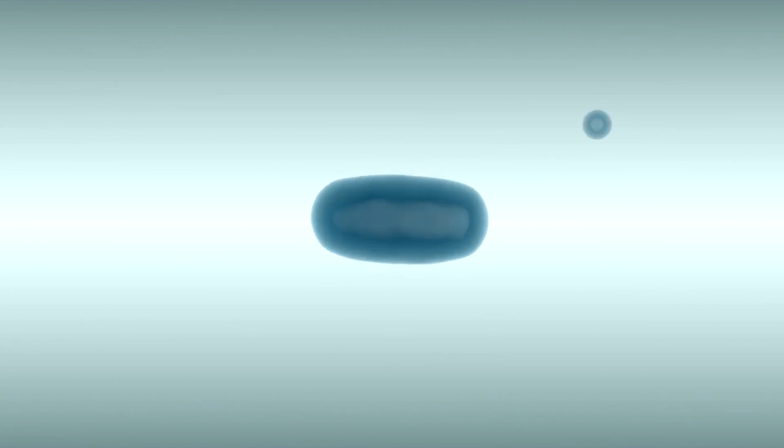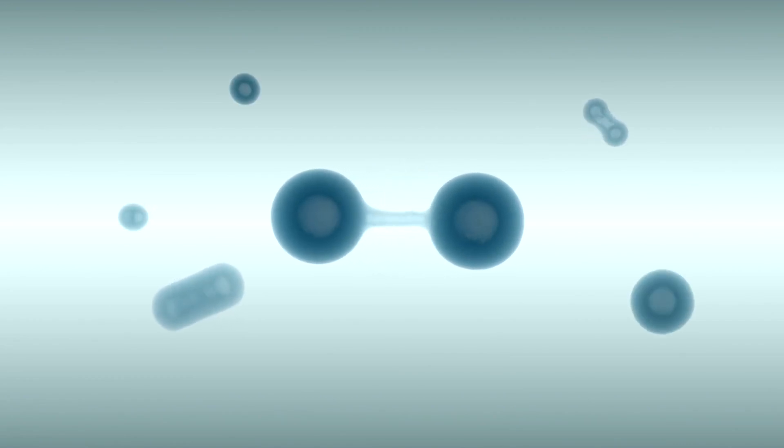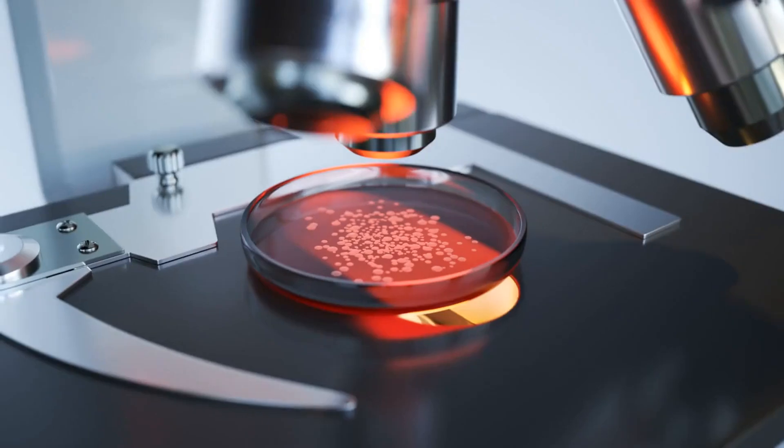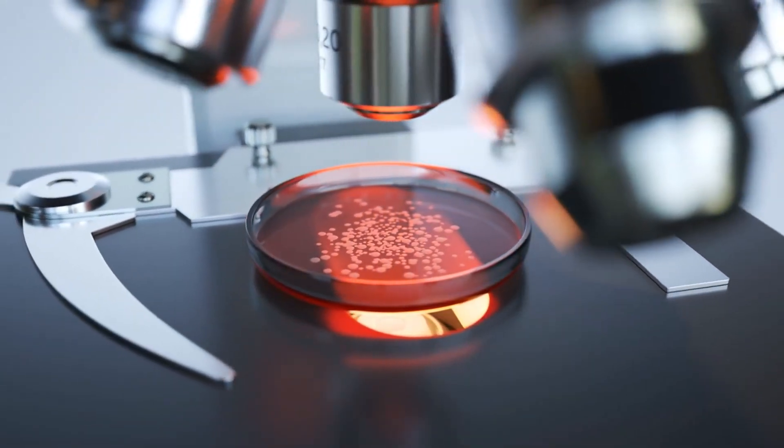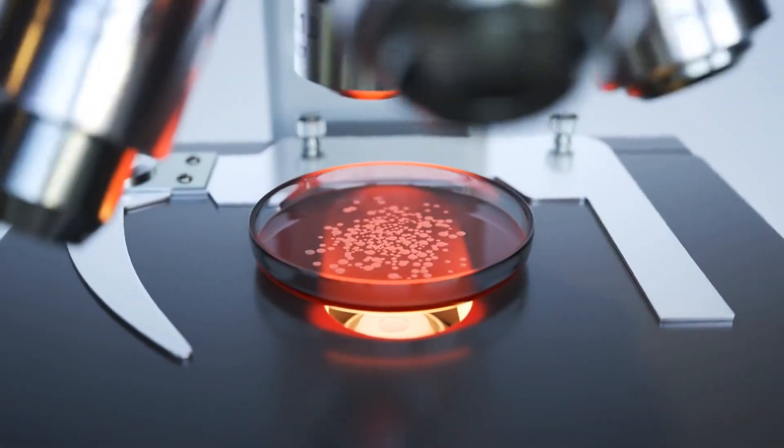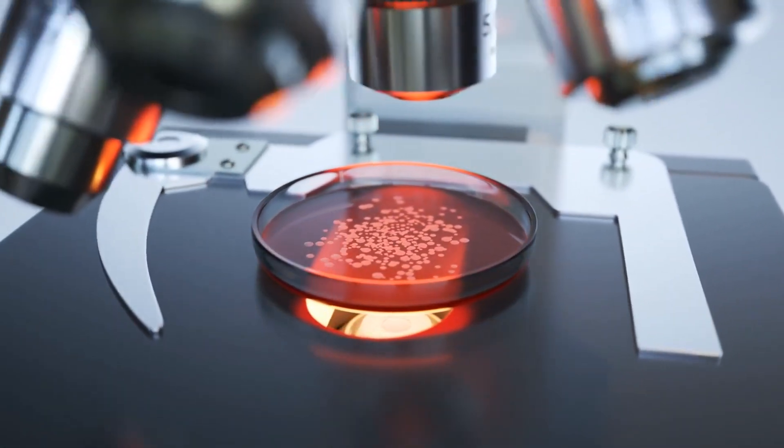The historical development of cell theory reflects a fascinating journey of discovery. The initial concepts emerged in the 17th century with the invention of the microscope, which allowed scientists like Robert Hooke to observe cells for the first time.